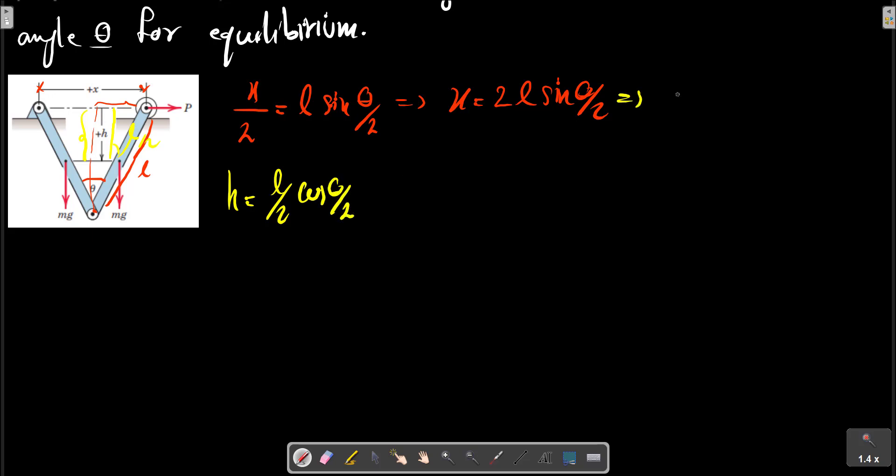From this relation we can obtain delta x equals to l cos theta delta theta. And from this relation we can obtain delta h equals to l over 4 times 2 sin theta delta theta.